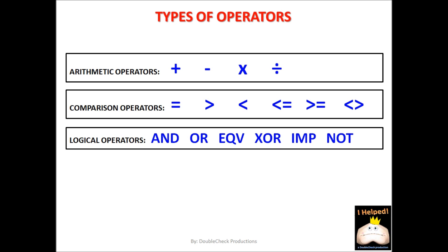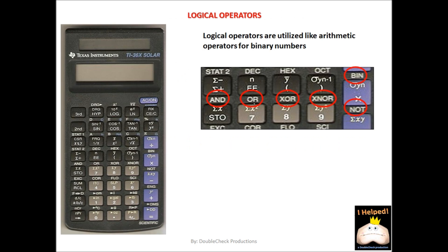Looking here, we see that our logical operators consist of AND, OR, equivalent, exclusive, implied, and NOT. Just to emphasize that logical operators are utilized like arithmetic operators only for binary numbers, I want to show you a picture of this calculator. If you notice here, we have actual functions that calculate binary numbers. The method that the logical operators calculate values by are what we're interested in — we basically want to recreate the functions performed by a calculator such as this one.